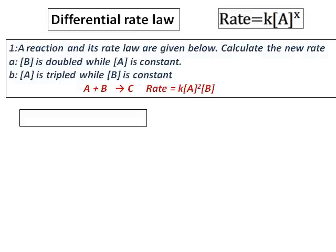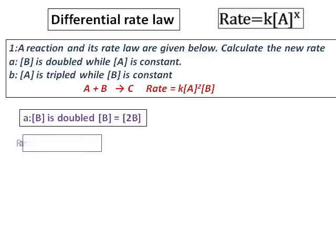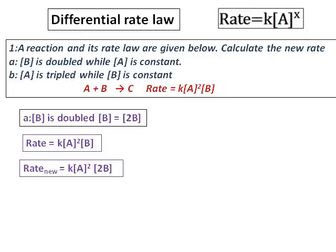Let's handle the first part. In this case, the concentration of B is doubled and concentration of A is constant. Therefore, the new concentration of B is written as 2B. The old rate is k[A]²[B]. The new rate is obtained by substituting 2B for B. Dividing the two rates gives that the new rate is twice the old rate.